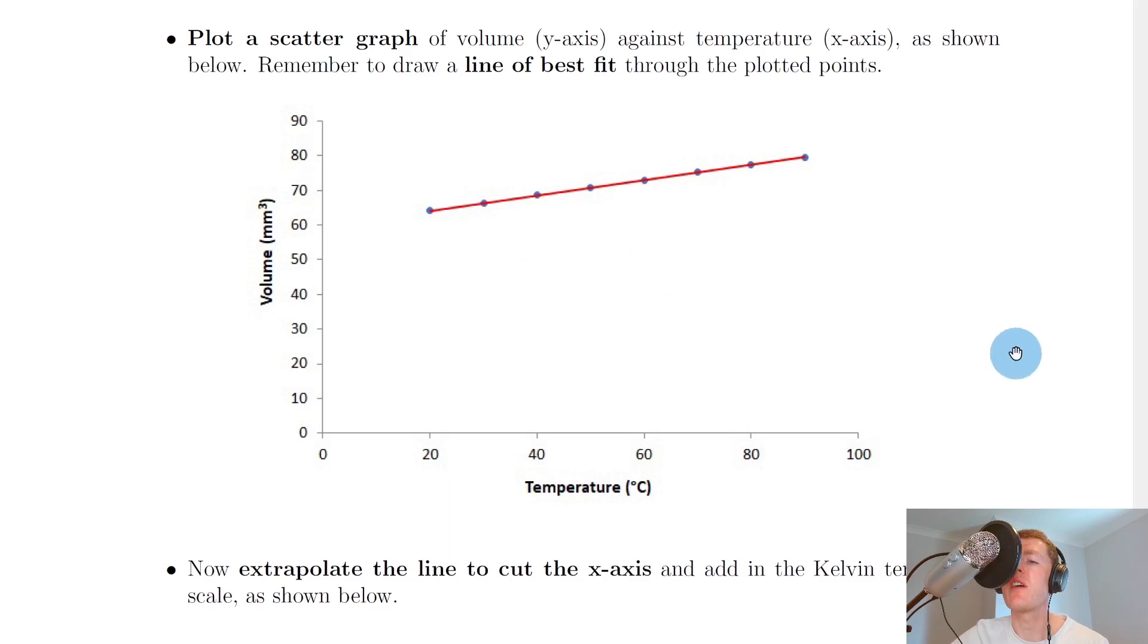However, this graph looks awfully similar to the first graph we got in the Gay-Lussac law experiment where we've got a straight line or linear relationship between the two variables but it's not exactly going through the origin.